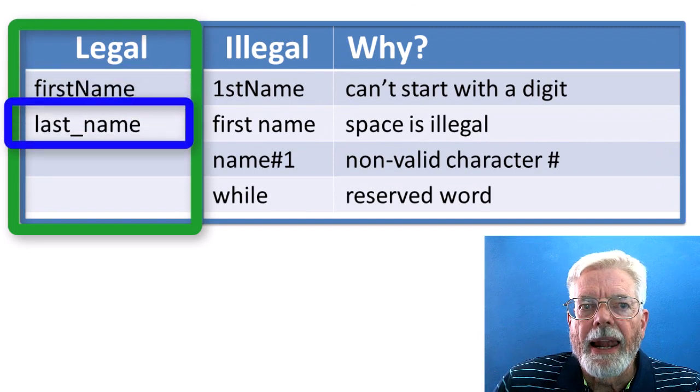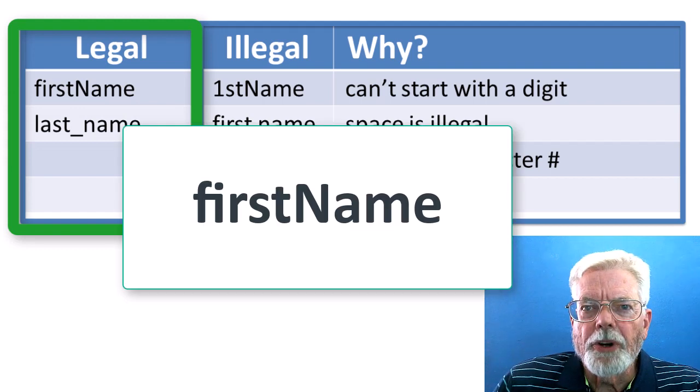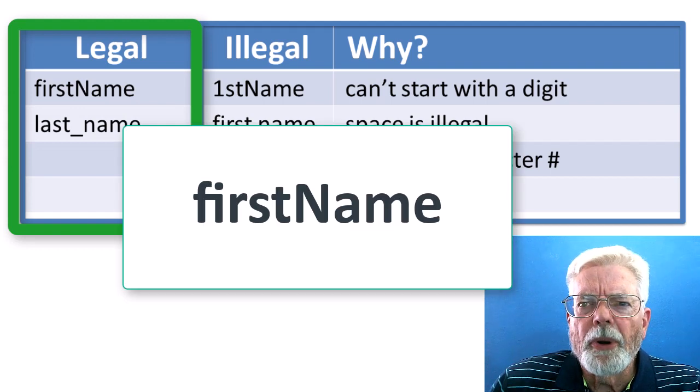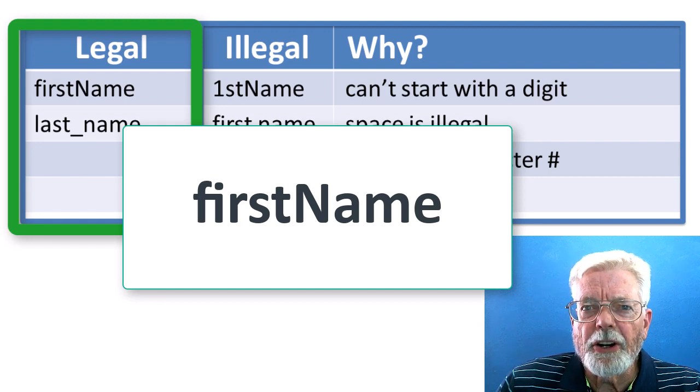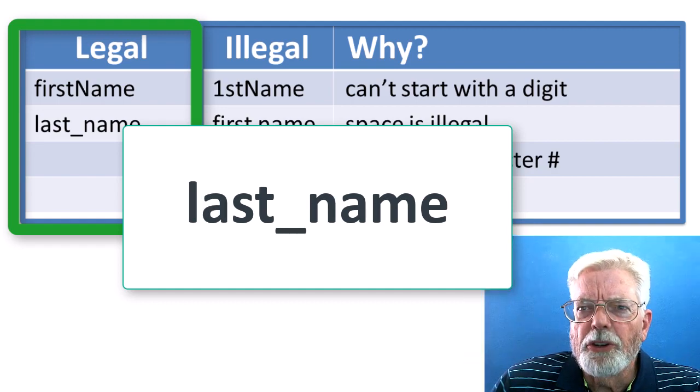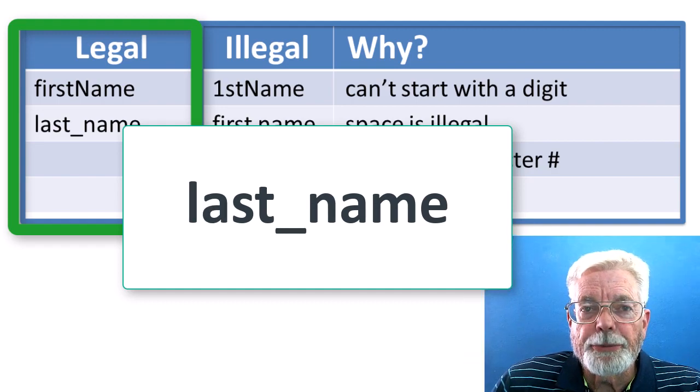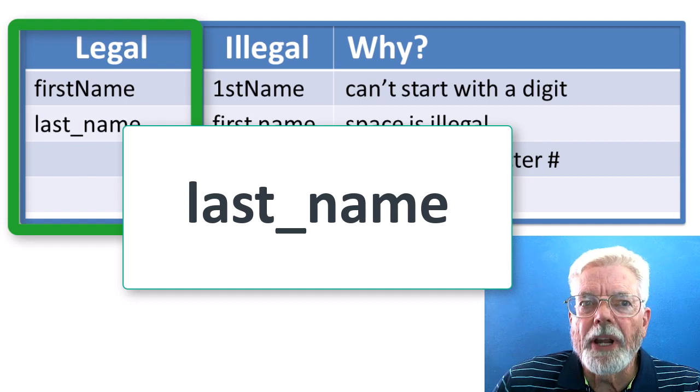First name. Last name. First name combines two English words together to form one variable name. It is easy to read because the word name has its first letter capitalized. Last name is also easy to read because instead of using a space as a separator between the English words, the underscore character is used.